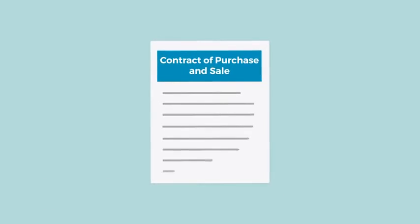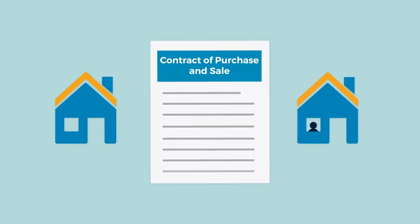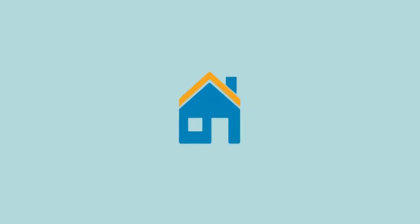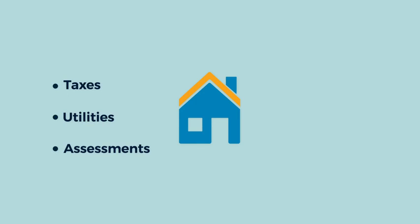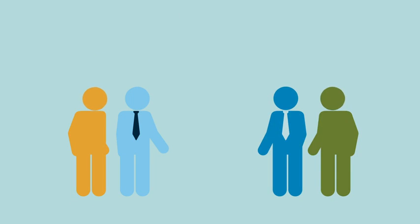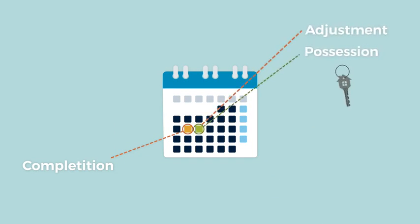The Contract of Purchase and Sale will specify the type of possession the buyer will receive on the possession date. For example, the buyer could receive vacant possession, or if there are tenants in the property, the contract may specify that the tenants will remain. The adjustment date is the day that the buyer assumes responsibility for the costs of the property — such as taxes, utilities, and assessments — and becomes entitled to its benefits, such as rents. The total money paid by the buyer on the completion date will be calculated so that each party is credited for its fair share as of the adjustment date. The adjustment date is typically the same date as possession.